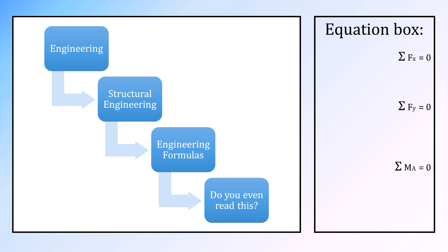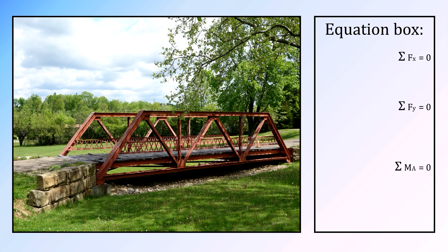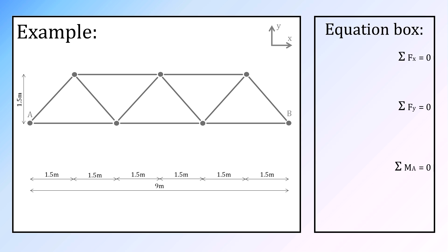An example: a truss bridge 9 meters long and 1.5 meters high with two weights, F1 equal to 5 kN and F2 equal to 12.5 kN.